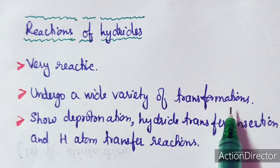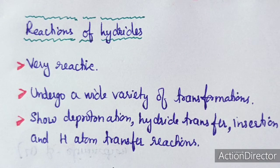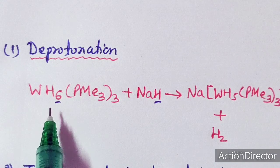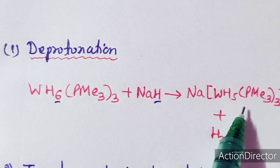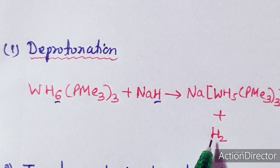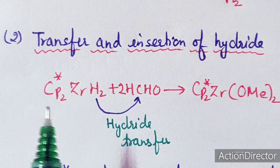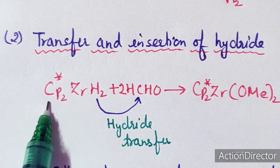Metal hydrides are generally very reactive and undergo a wide variety of transformations. The four main reactions are: deprotonation, hydride transfer, insertion, and hydrogen atom transfer. In deprotonation, a hydrogen is removed as a proton from the metal hydride — for example by reaction with sodium — forming the sodium salt of the metal hydride and evolving H₂.